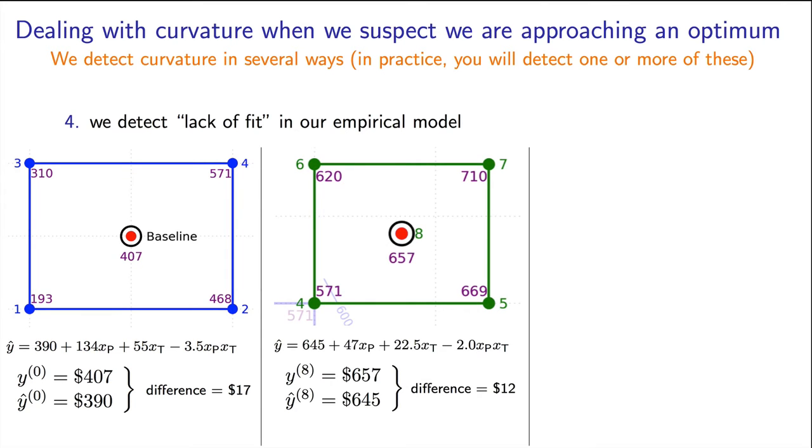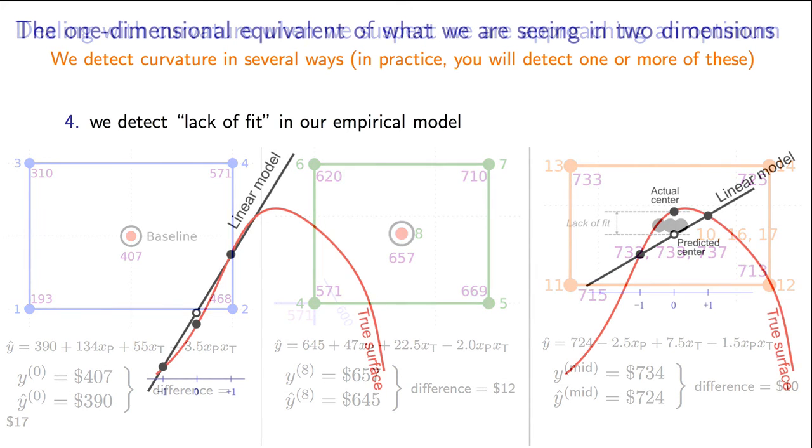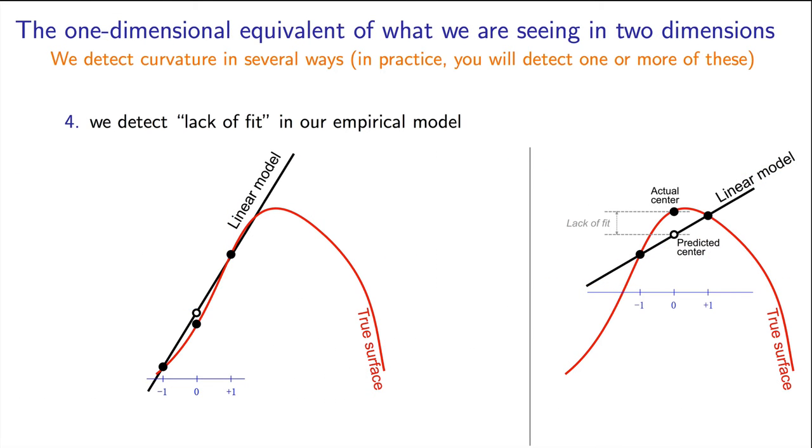In the second factorial, the actual centre was $657, while the predicted centre was $645, a difference of $12. That again is small when compared to the neighbourhood we're in. In this third factorial though, the actual centre is at the average of these three baseline values, $734. Compare that to the predicted centre value of $724. That's a difference of $10, which when compared to the largest effect of $7.5, and to the level of noise of about $5, indicates an important deviation in the model versus the actual surface that we're on, at least in the centre. So if we're getting large deviations at the centre, we cannot hope to get good predictions outside of the range of the model. And good predictions are essential to optimize in the correct direction.